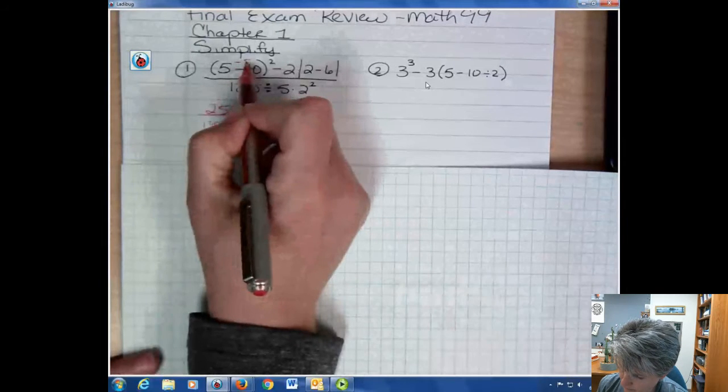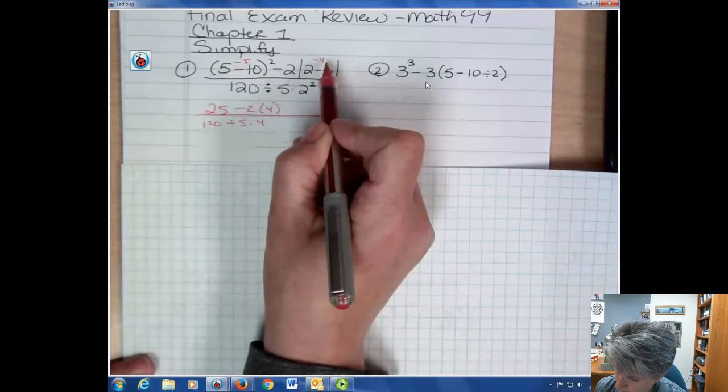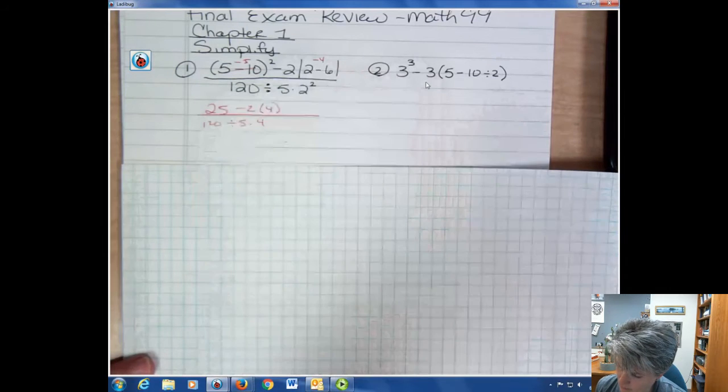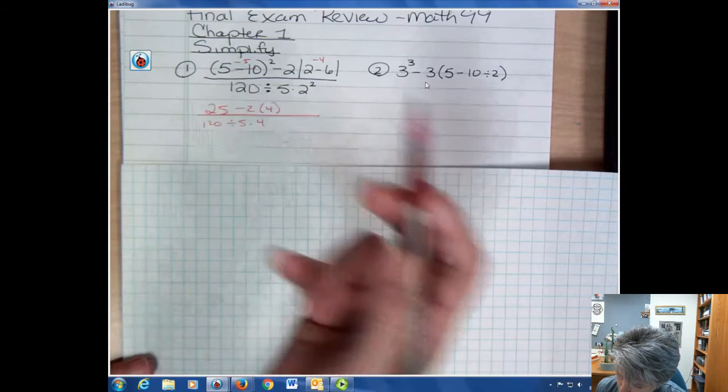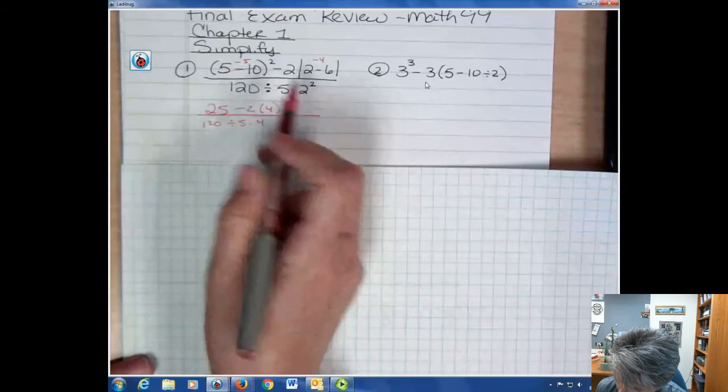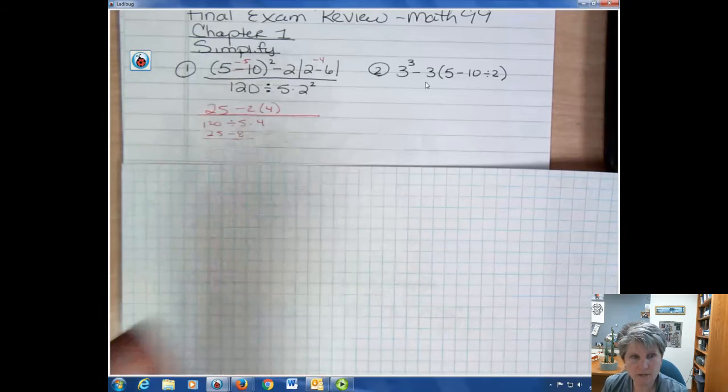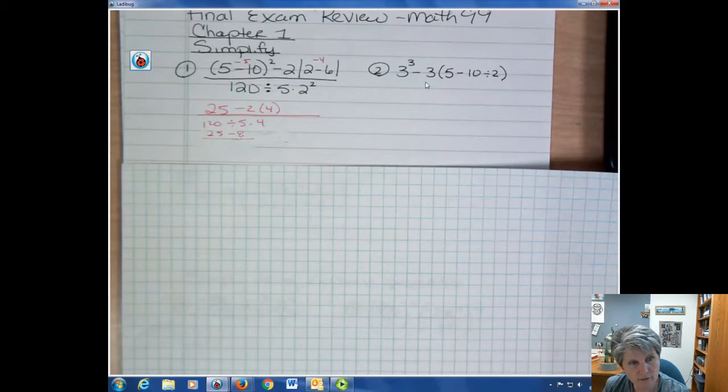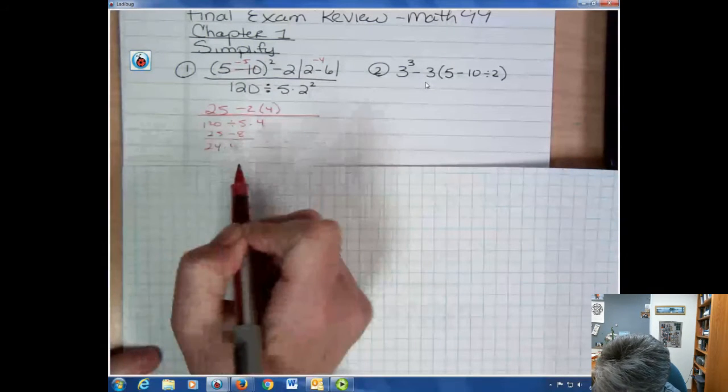5 minus 10 is negative 5, squared is how I got 25. 2 minus 6 is negative 4, and the absolute value of negative 4 is 4, but I still have negative 2 times that. Then I did the exponent down below. 2 squared is 4. The next thing I'm going to do is on the top I get 25 minus 8. And on the bottom I have multiply and divide. Be careful because you want to do that division before you do the multiplication because you go left to right. 120 divided by 5 is 24, and then times 4.